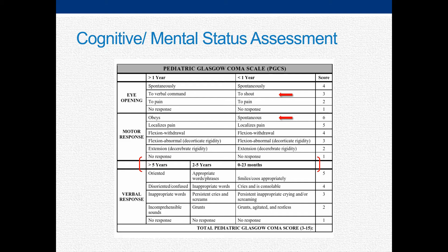Modifications have been made with regards to expected responses in several areas based on developmental stages, thus allowing for a more accurate interpretation of the score. The eye and motor components have been adjusted for those greater than or less than one year of age to reflect limited ability to follow commands in the younger age group. The verbal component has been divided up further into three groups, given the impact of cognitive development over time.